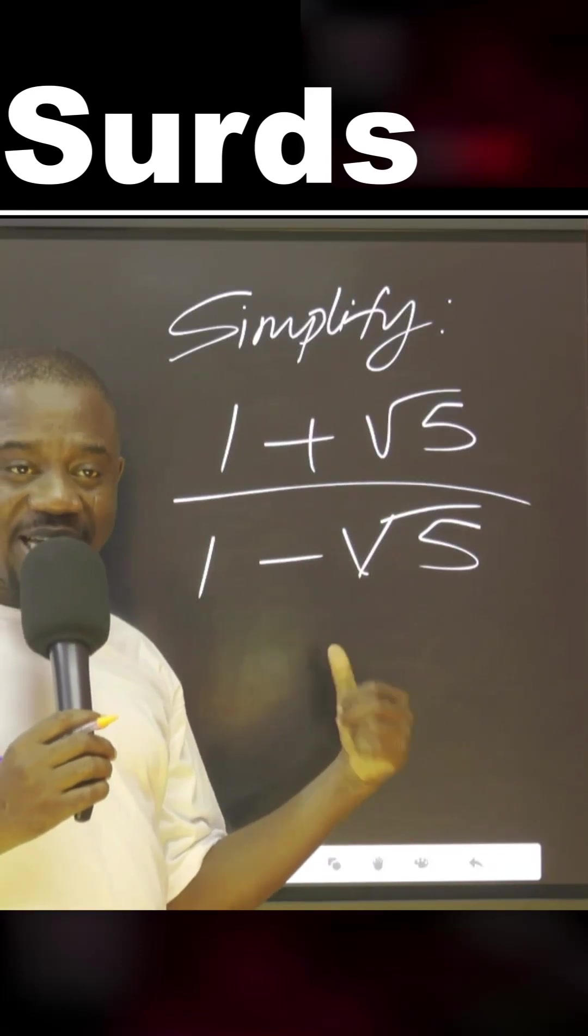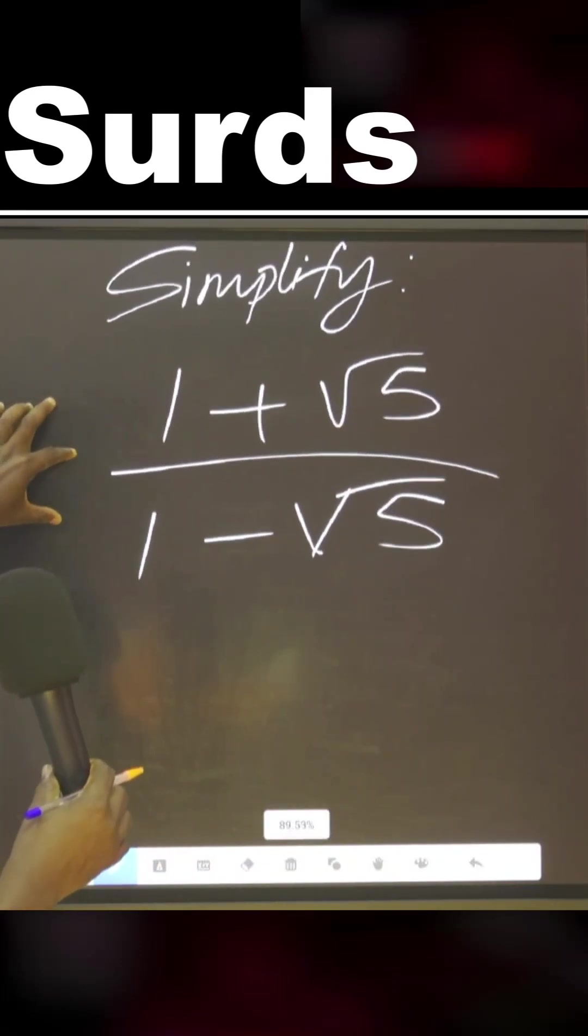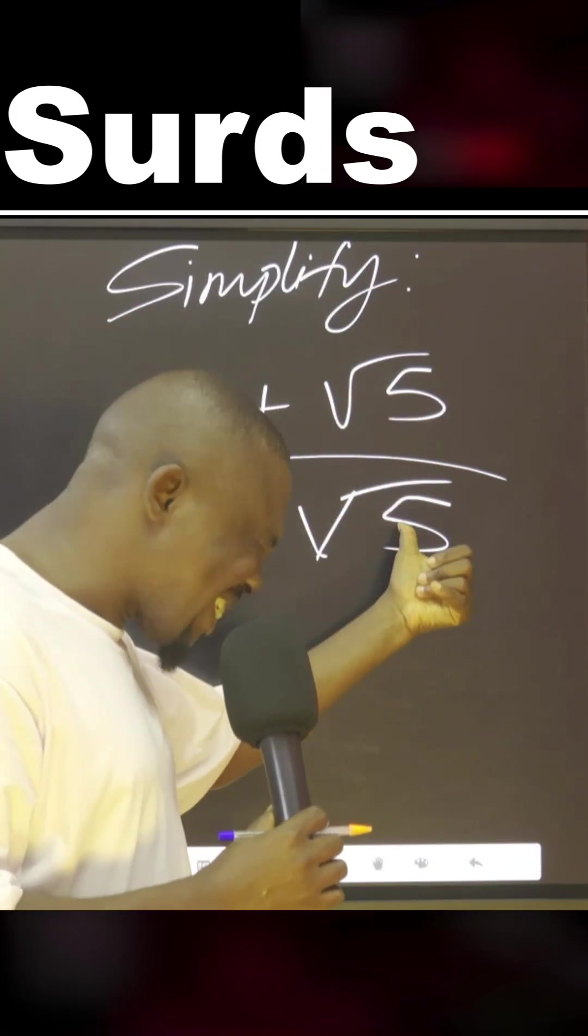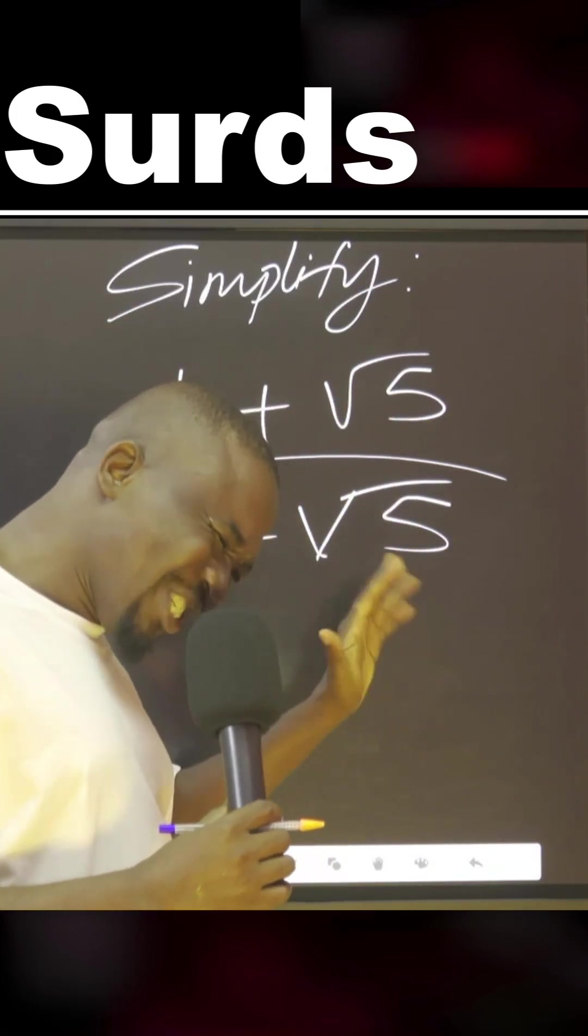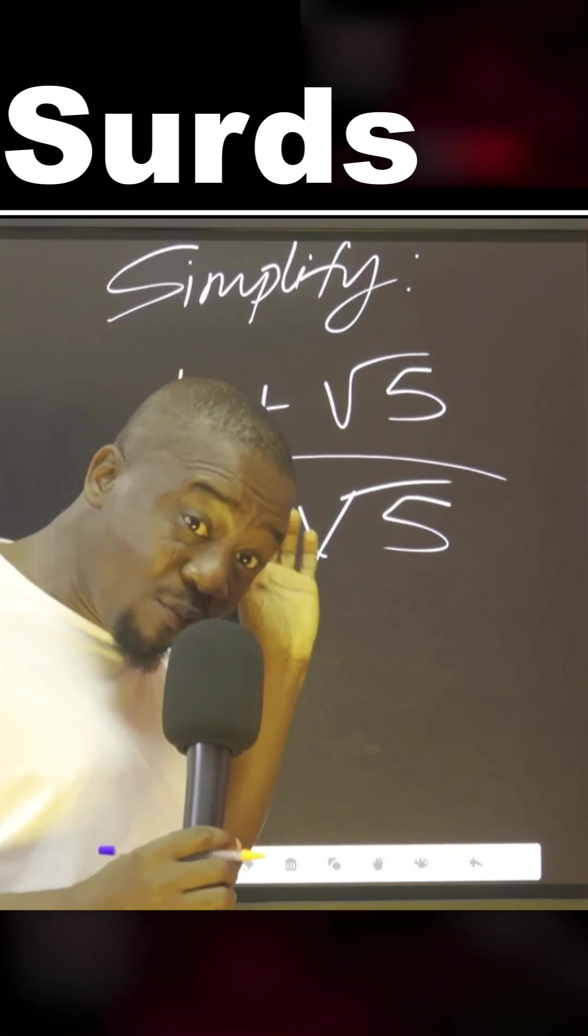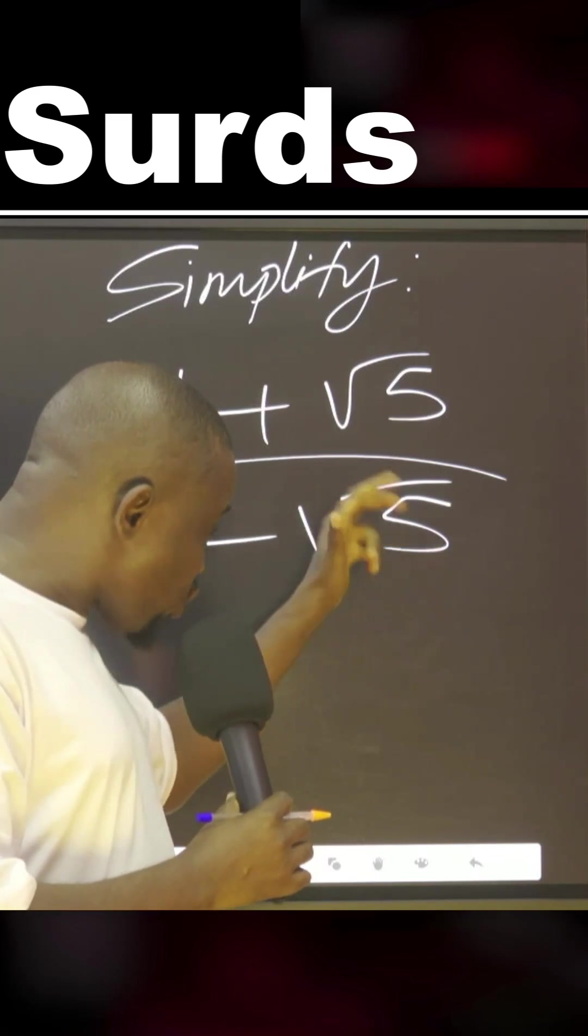Let's look at this. We are asked to simplify this. How do you simplify this? Whenever you see anything surd, we don't want to see surd at the denominator. We hate it. We must remove that. But because this is not just one surd, there's something with it, we have to use the conjugate of this.